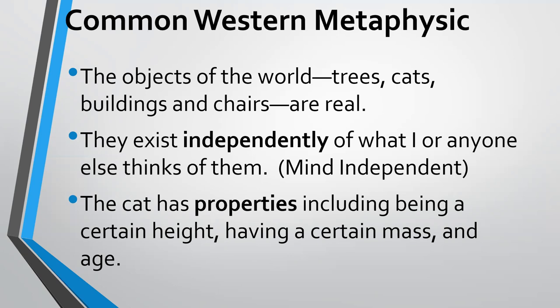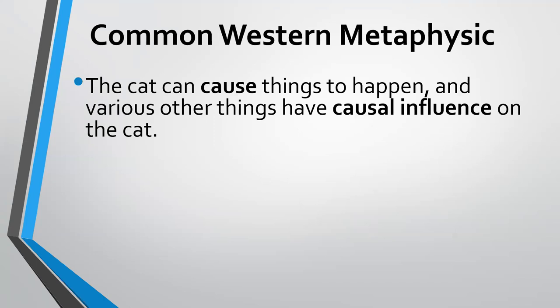Objects have properties. Properties include things like being a certain height, having a certain mass, having a certain age — for a cat, maybe being soft, purring, those kinds of things. Properties are things that can be shared; other things would have that same height, that same mass, the same degree of softness. So we have objects that exist independently of what we think about them, they have properties, and the cat can cause things to happen. There are causal interactions among these individual things, and various other things can have causal influence on the cat. Causation is a topic in metaphysics that is interesting to pursue and think about.